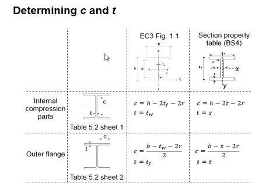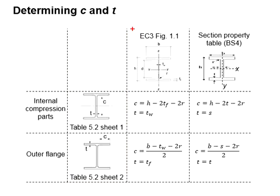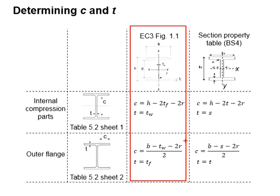For determining the c and t, the graphical presentation is given in Table 5.2. According to the definition of Eurocode, the series of equations are given here.